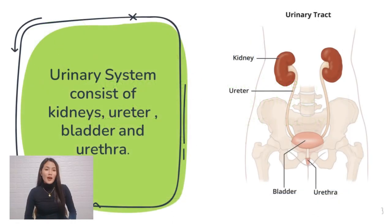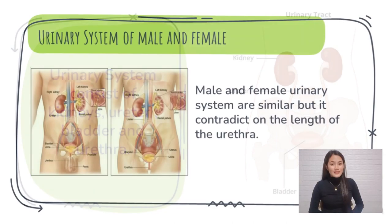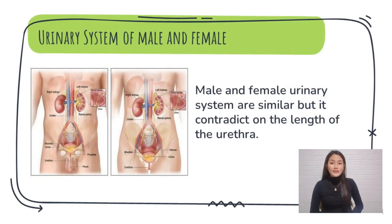This is how the urinary system looks. As you can see in the picture, it consists of the kidneys, ureters, bladder, and urethra. This shows the urinary system of both males and females.